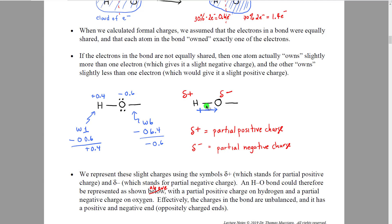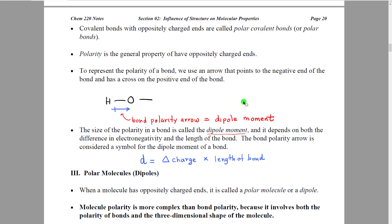We don't need to worry about the actual numbers — we just need to know that because oxygen is pulling electrons in that direction, the hydrogen is going to be lacking some slight amount of electrons and have a positive charge, and the oxygen is going to have a slight excess of electrons and have a partial negative charge. Covalent bonds with oppositely charged ends are called polar covalent bonds, or sometimes just polar bonds. The word 'polar' is a generalized term meaning having opposites in space.